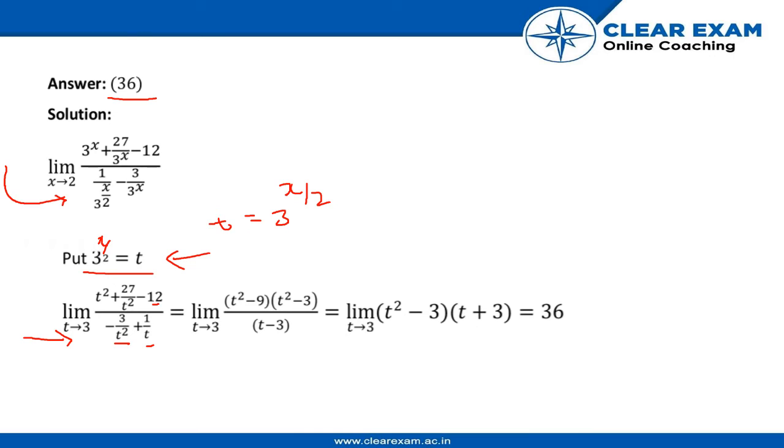t square minus 9 and t square minus 3. This is by using the quadratic equation, we had just separated it out. And also the denominator of both of these are cancelled out. That is, t square is cancelled out up and down.